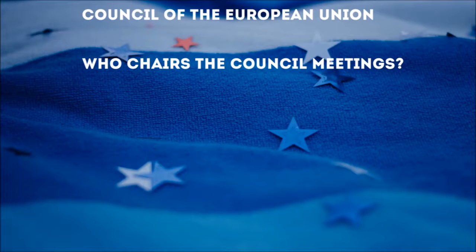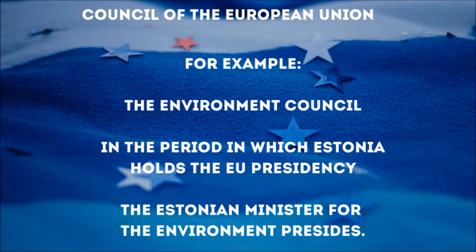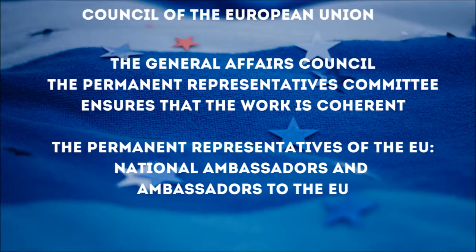Who chairs the Council meetings? The High Representative of the Union for Foreign Affairs and Security Policy holds the permanent presidency of the Foreign Affairs Council. At the other sessions of the Council, the relevant ministers of the EU member states who hold the rotating EU presidency chair the meetings. For example, when the Environment Council meets in the period in which Estonia holds the EU presidency, the Estonian Minister for the Environment presides. The work of the General Affairs Council, assisted by the Permanent Representatives Committee, ensures that the work is coherent.